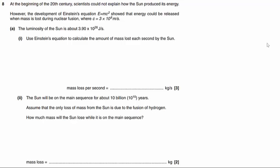Question number eight. At the beginning of the 20th century, scientists could not explain how the sun produced its energy. However, the development of Einstein's equation E equals mc squared showed that energy could be released when mass is lost during nuclear fusion, where c is 3 times 10 to the power of 8 metres per second.